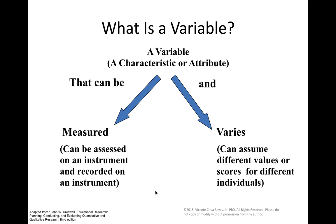A variable is a characteristic or attribute that can be measured and that it varies. When we say it can be measured, it can be assessed and recorded on an instrument. When it varies, we are saying it can assume different values or scores for different individuals.